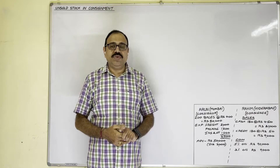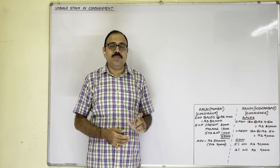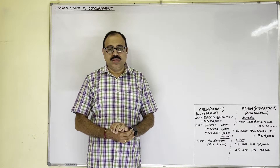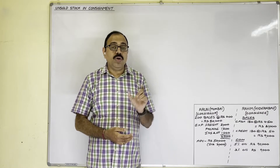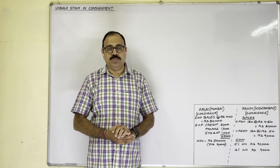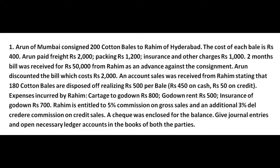Hello students. In this video I'm going to explain the second problem from the Consignment Accounts topic, made for degree students. I'll concentrate on unsold stock in consignment accounts. Previous video links are available in the description box. The question: Arun of Mumbai consigned 200 cotton bales to Rahim of Hyderabad. The cost of each bale is 400 rupees. Arun paid freight 2000 rupees, packing 1200 rupees, insurance and other charges 1000 rupees. A two-months bill was received for 50,000 rupees from Rahim as an advance against the consignment.